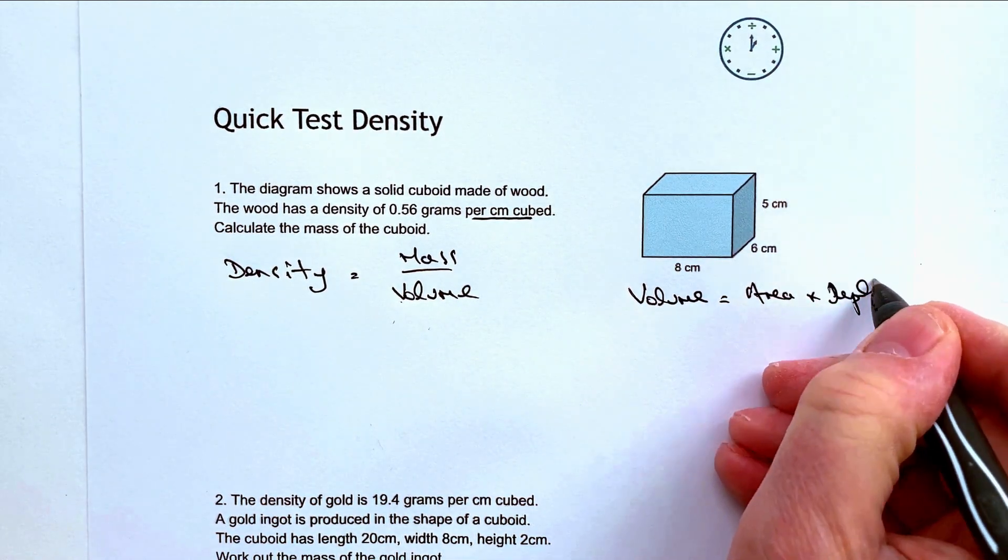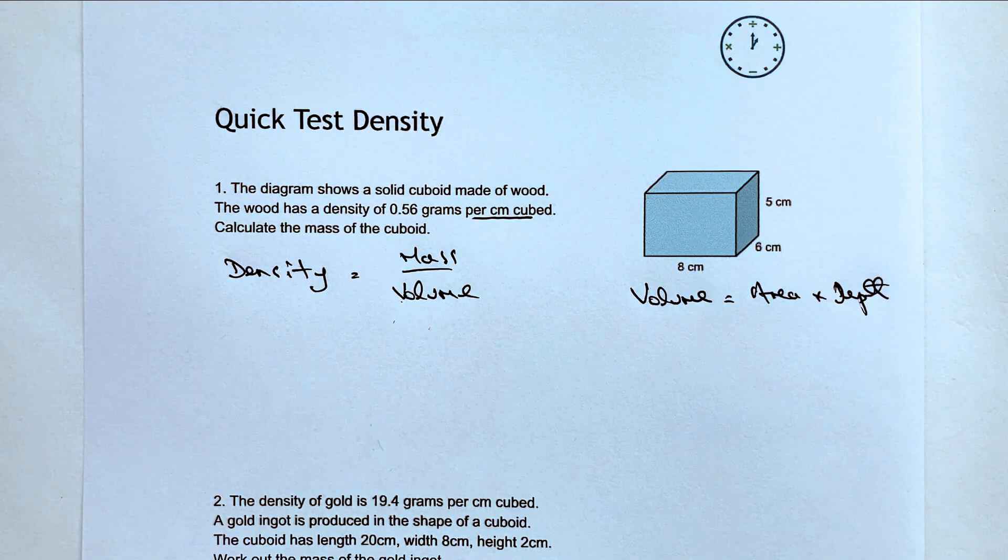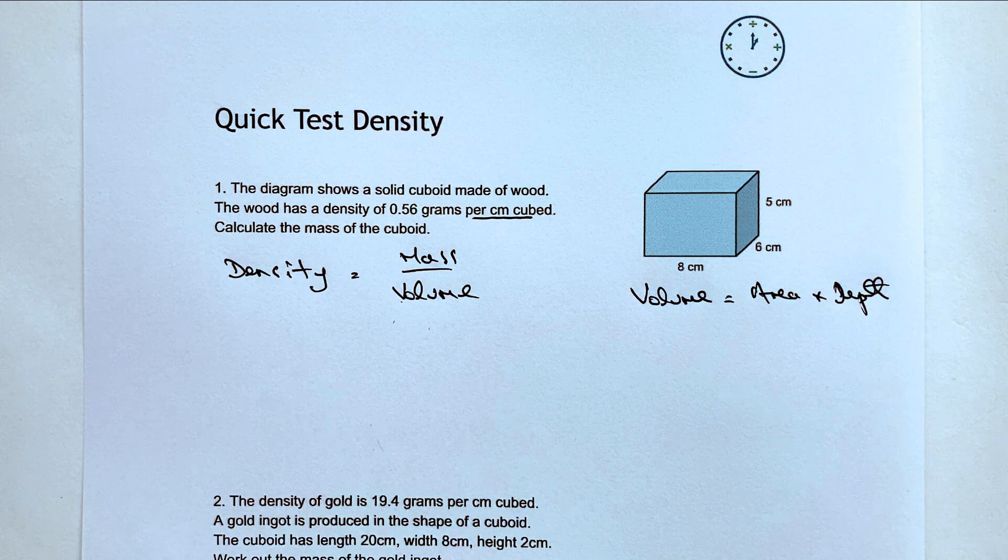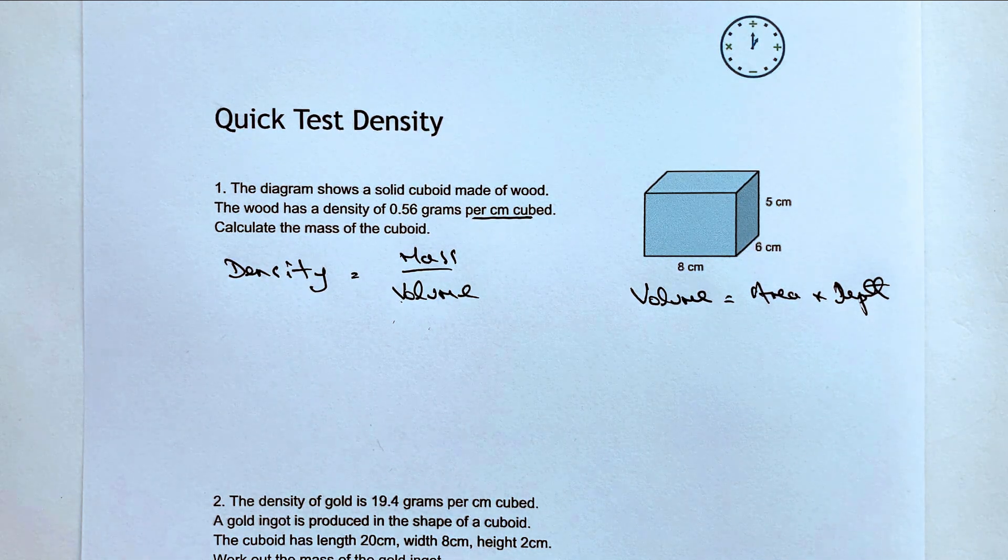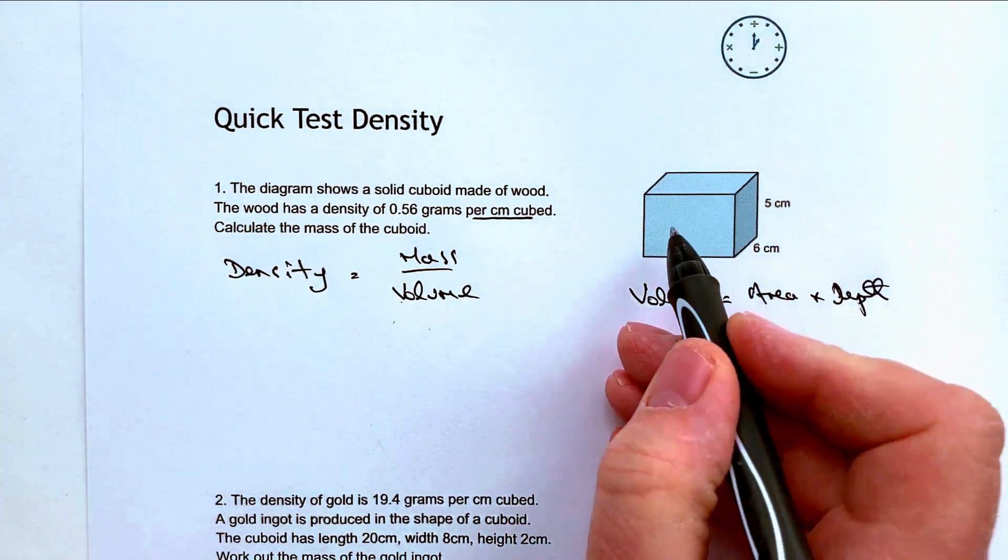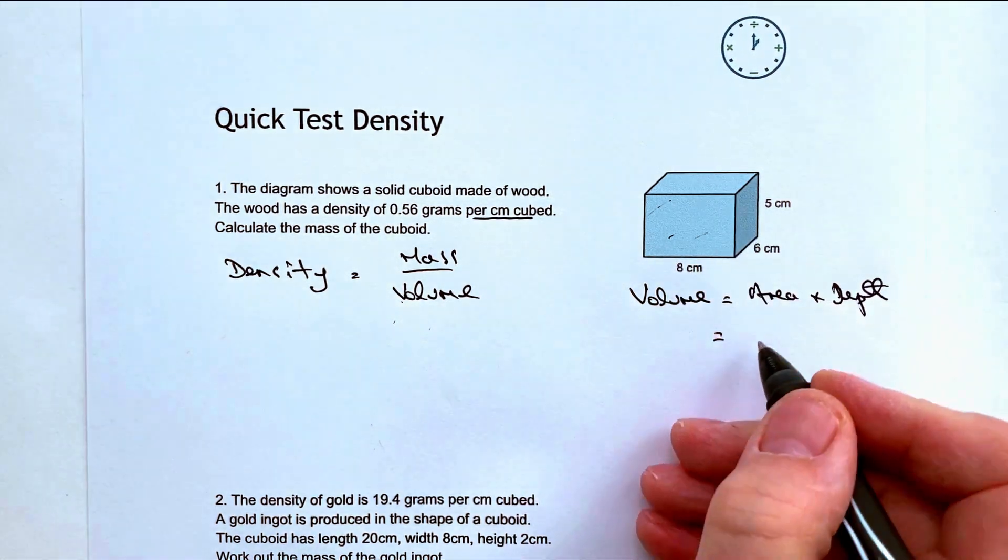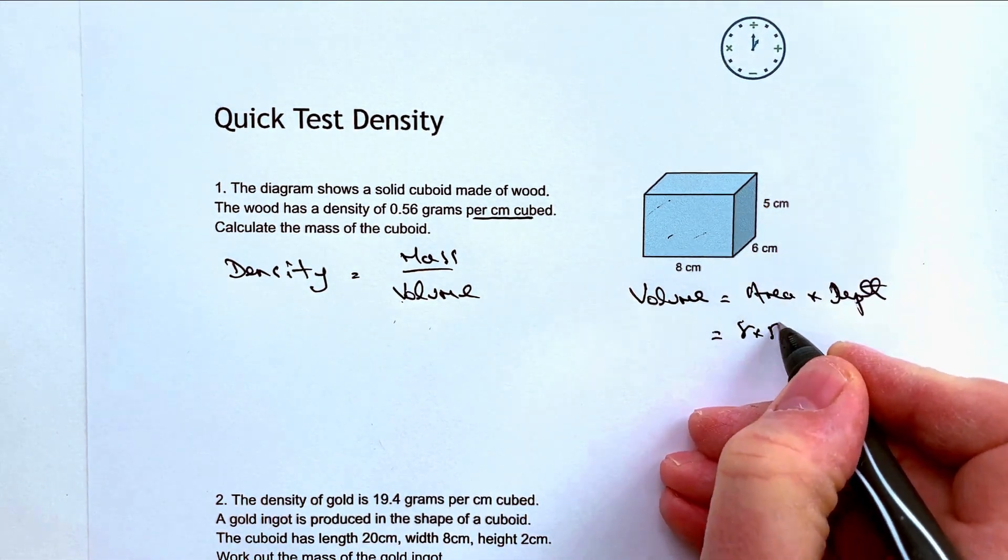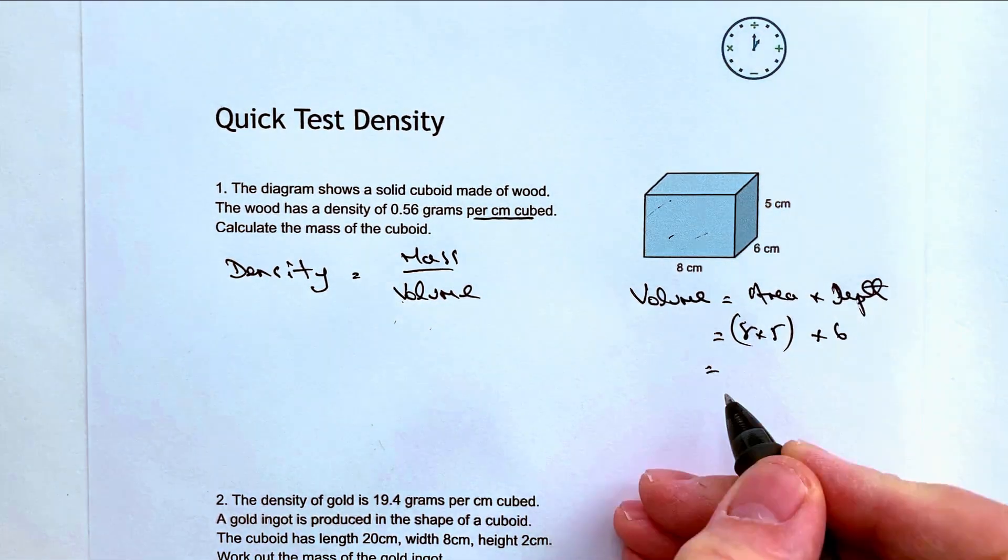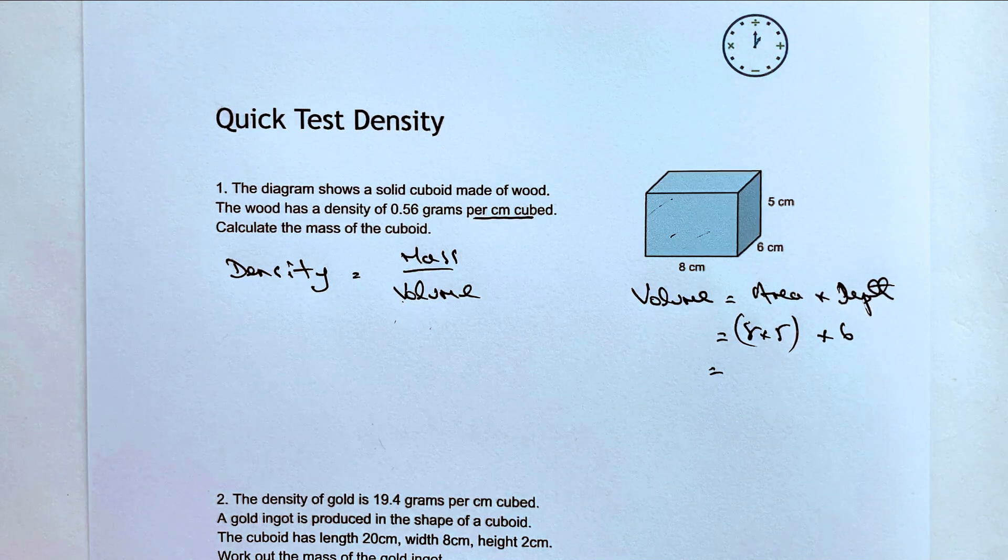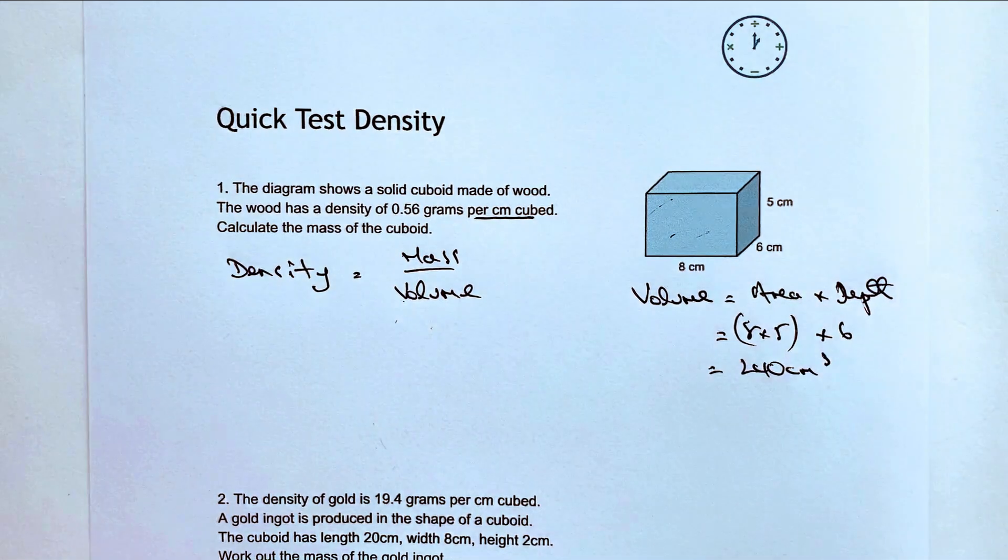I think it's kind of important to do it this way. I do see students where they actually just multiply all three together and that's absolutely right, but it's just a good discipline to be in to actually break it up. So the area is the area of this front surface which is going to be 8 times 5, and then the depth is going to be multiplied by 6.